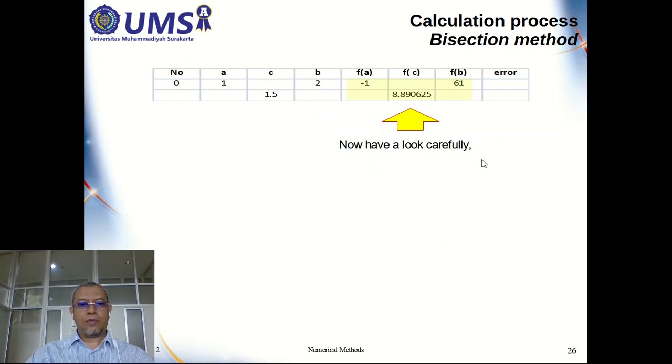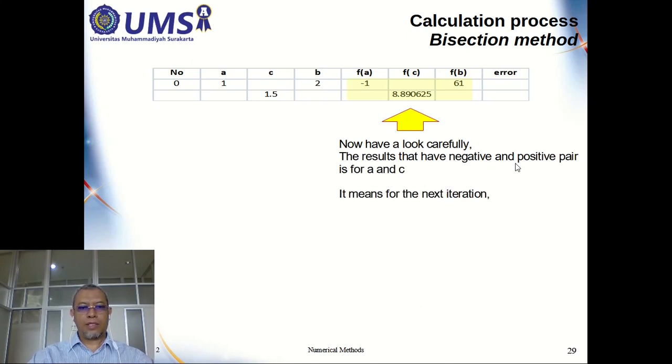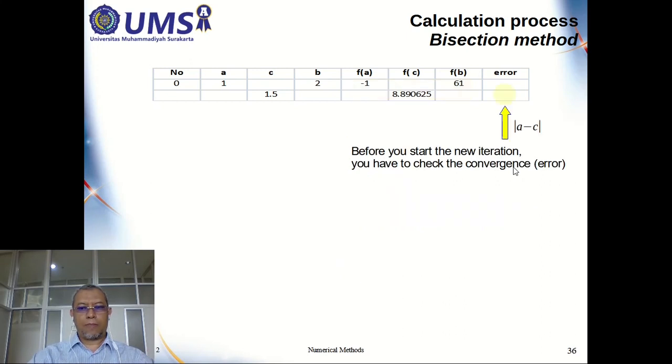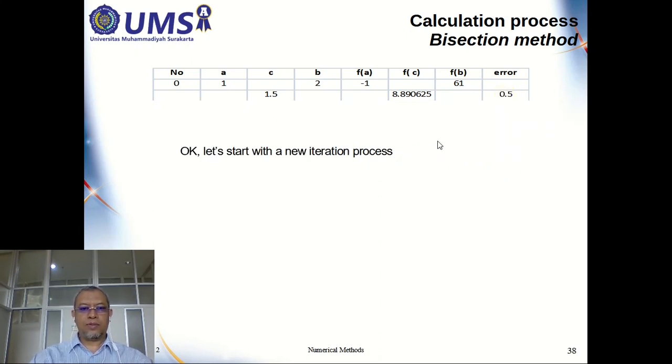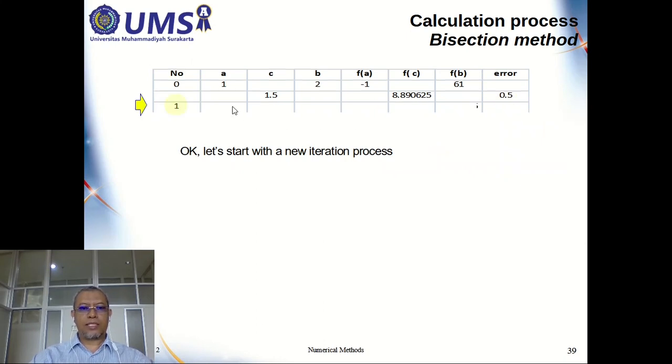Okay, then what you have to do, 1.5 assume as B, 1 assume as A. Then you can continue. Now you have to calculate the error first. Because you are using A and C, so the difference between A and C is 1 minus 1.5, 0.5 absolute value.